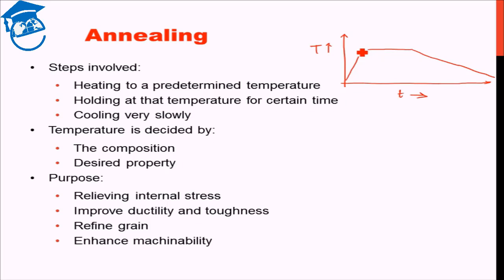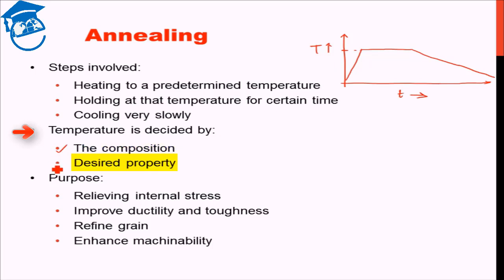Now this temperature — the final temperature at which we are carrying out the annealing — how do we decide that? The decision on what the temperature will be is taken after considering the composition of the material and what is the final property that we require. So these factors are taken into account while deciding whether the temperature should be 700, 800, 500 degrees Celsius or whatever. The composition and the desired property will dictate the temperature as well as the time of hold.